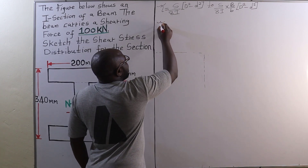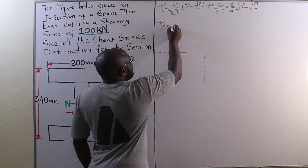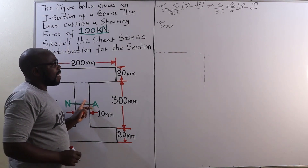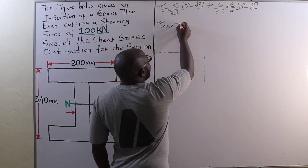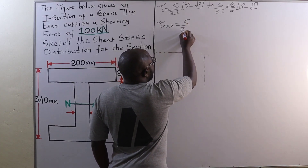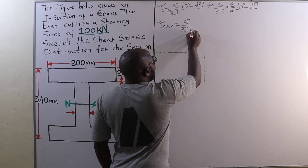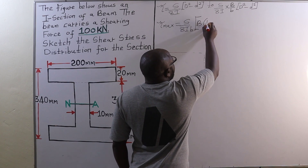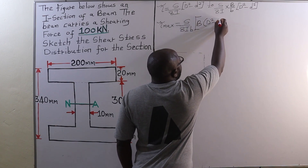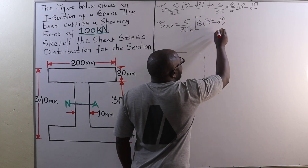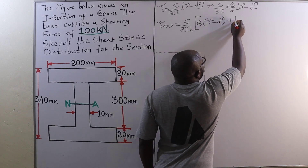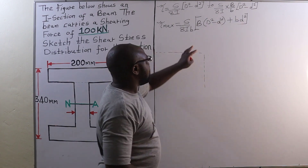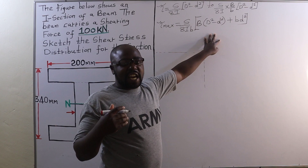The maximum shearing stress usually occurs at the web and is given by S divided by 8I times small b, into capital B times (D² minus d²) plus b times d². That is the formula that gives us the maximum shearing stress.